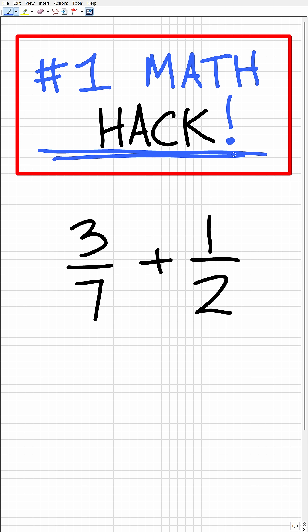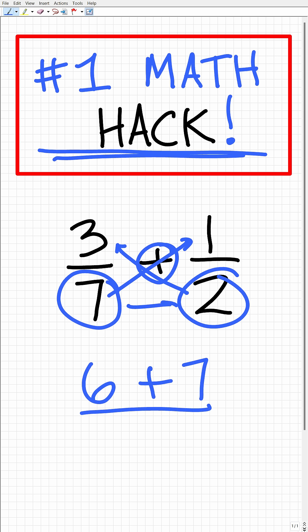And this is how it works. We're going to take this number here and multiply it this way. So 2 times 3 is 6. And this is an addition problem, so put plus right here. And then we'll take this number and multiply it this way. So 7 times 1 is 7 over 7 times 2, which is 14.